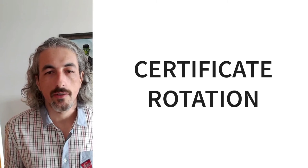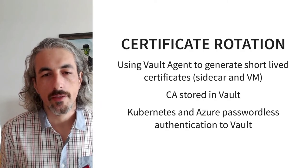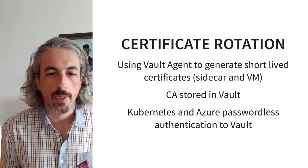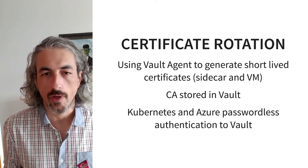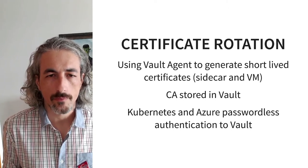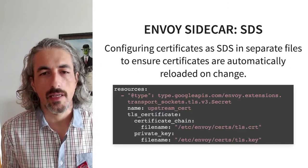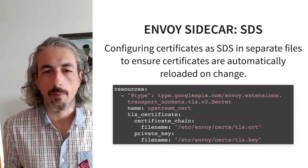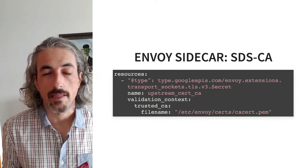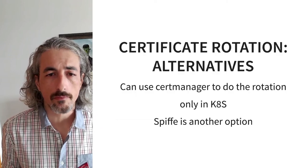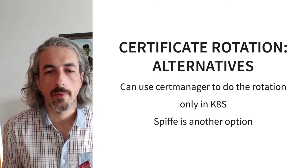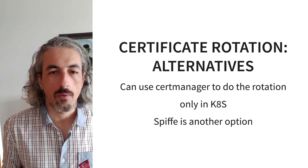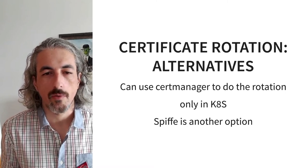For certificate rotation, we use Vault agents to generate short-lived certificates both on the sidecar and the VM. The certificate authority is stored in Vault, and we use passwordless authentication from Kubernetes and Azure VMs to Vault. The certificates are configured in separate SDS files, ensuring they are automatically reloaded when changed — so when the Vault agent rotates the certificates, Envoy automatically notices. There are alternatives: you can use cert-manager on the Kubernetes side for sidecar rotation, or SPIFFE, but we didn't want to complicate our first implementation.